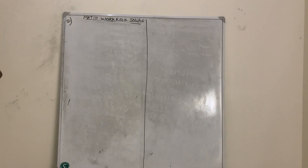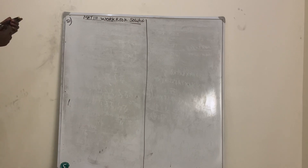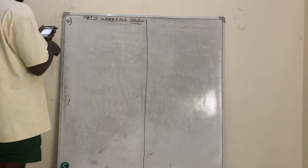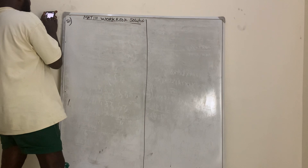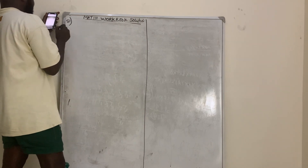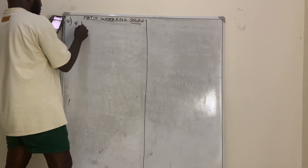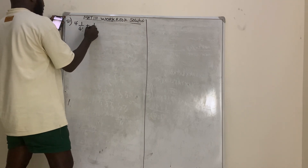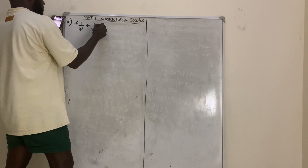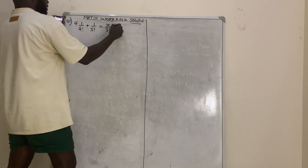This is the last video we are going to make on solving the math workbook, Math 111 workbook. If today is your first day watching our video, please subscribe. Question number 51 says that if 1 over 4 factorial plus 1 over 5 factorial is equal to x over 3 factorial, find x.